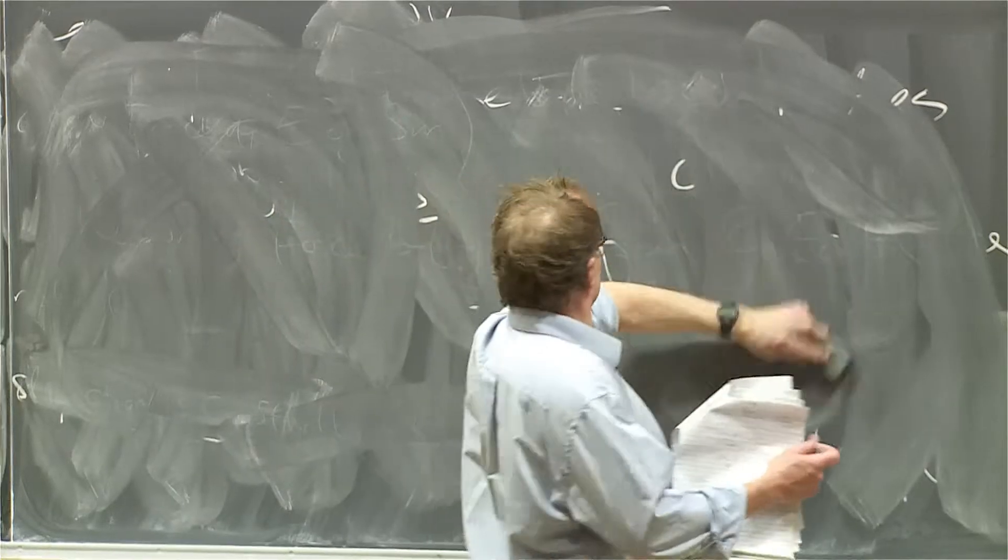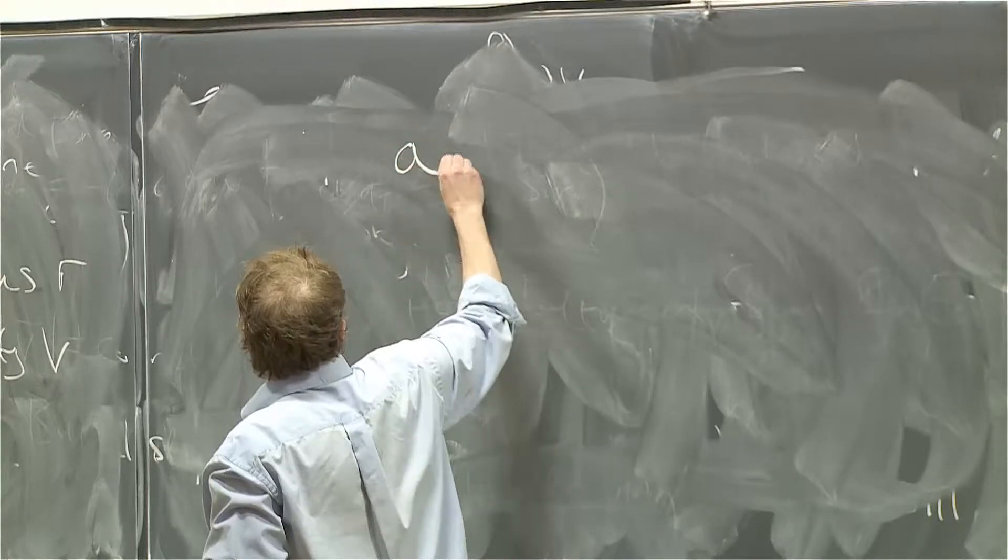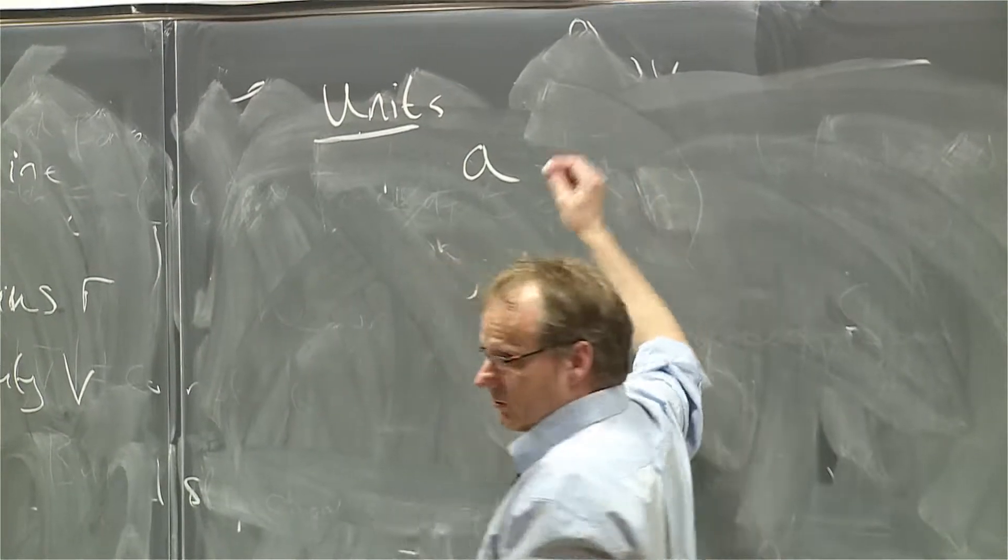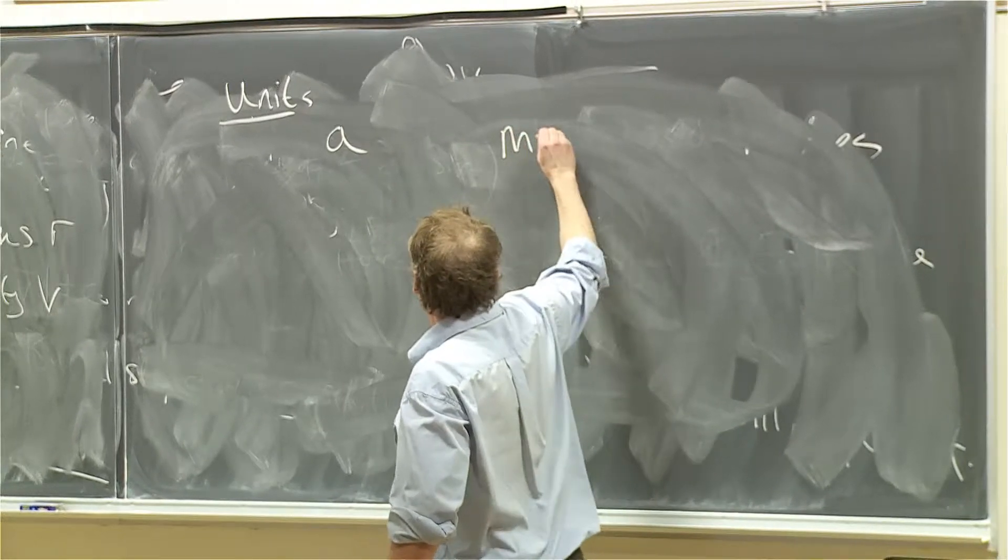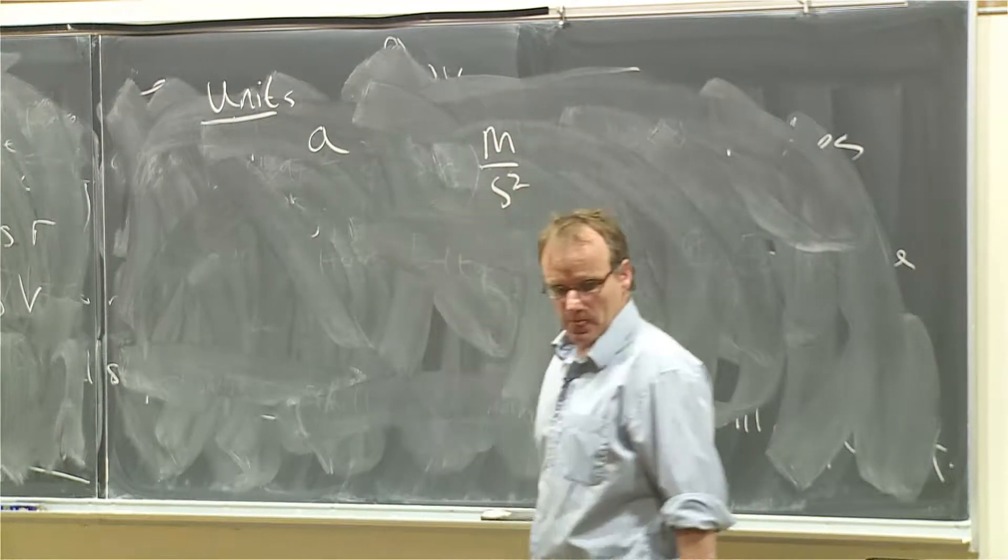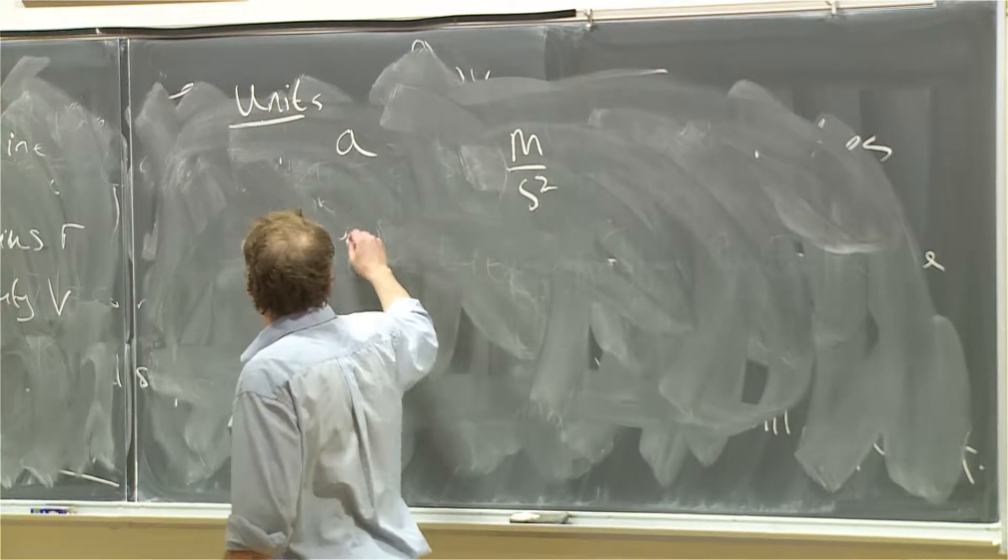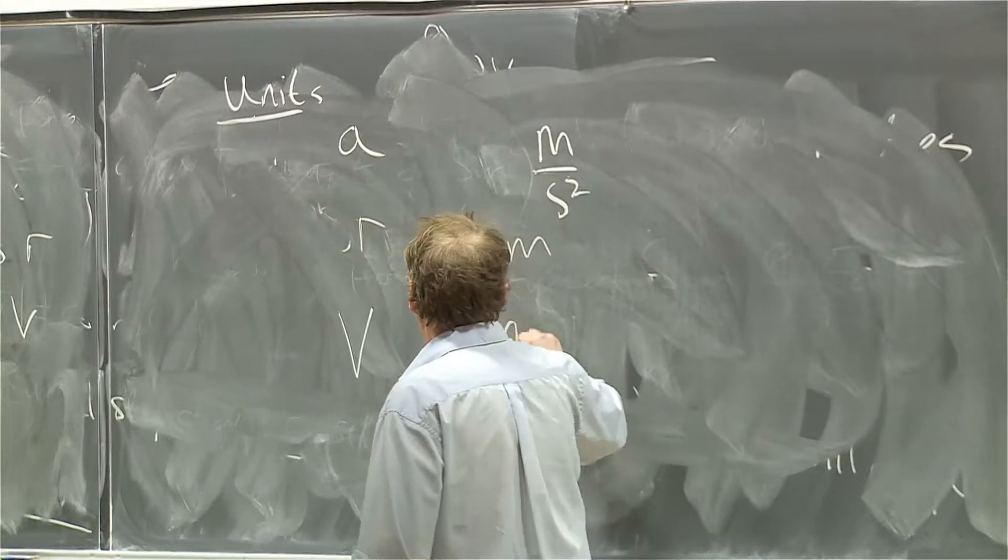So let's just look at the units. So A, just looking at the units. A, what are the units of acceleration? Right. Meters per second squared, right? What about the units of radius? Length. Right. And the units of velocity, right?